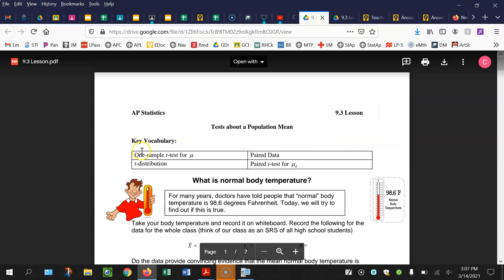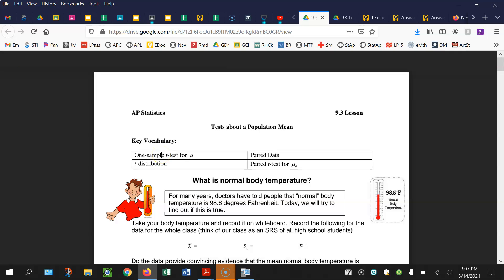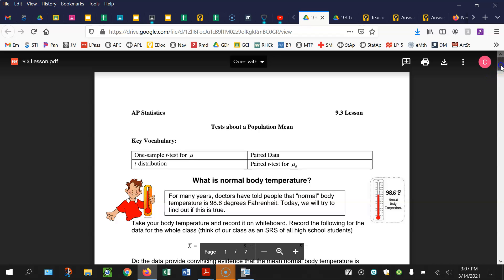Key vocabulary: the name of this testing procedure is going to be a one-sample t-test. We're going to use the t-distribution, which we did last week. For paired data, we're going to look at something called a paired t-test for mu sub d. We'll get into that later in the lesson.